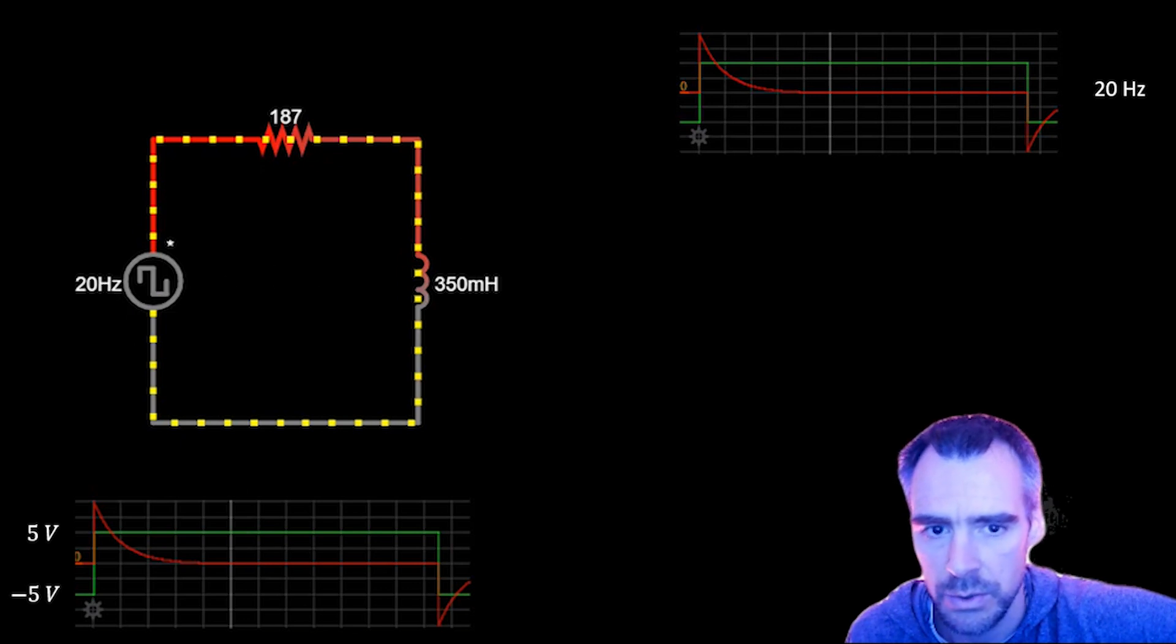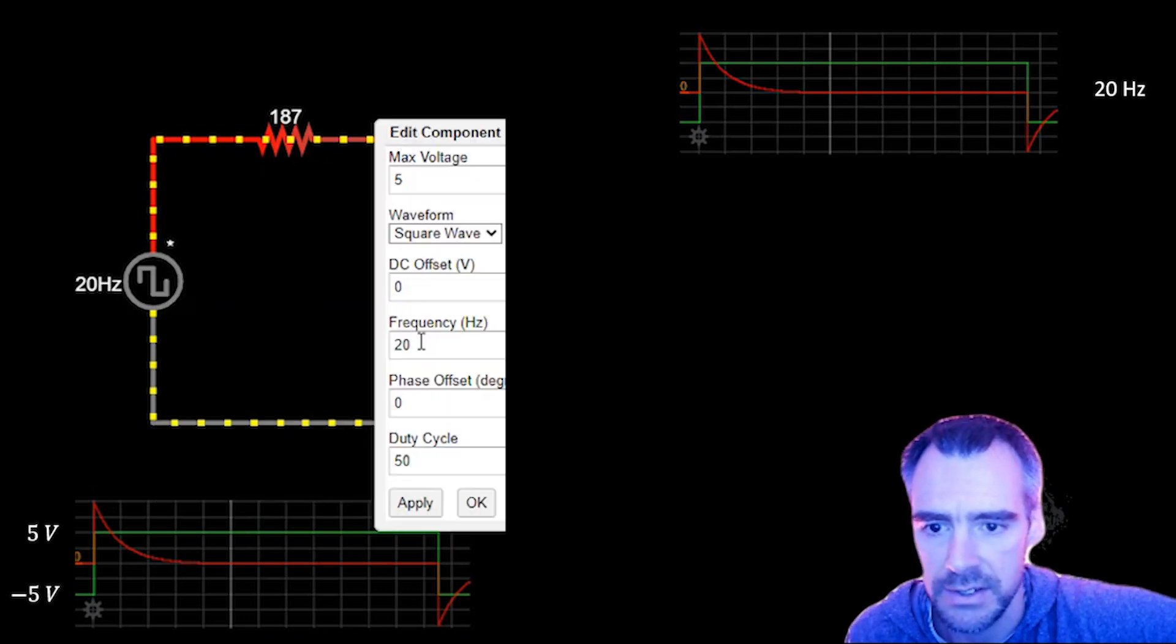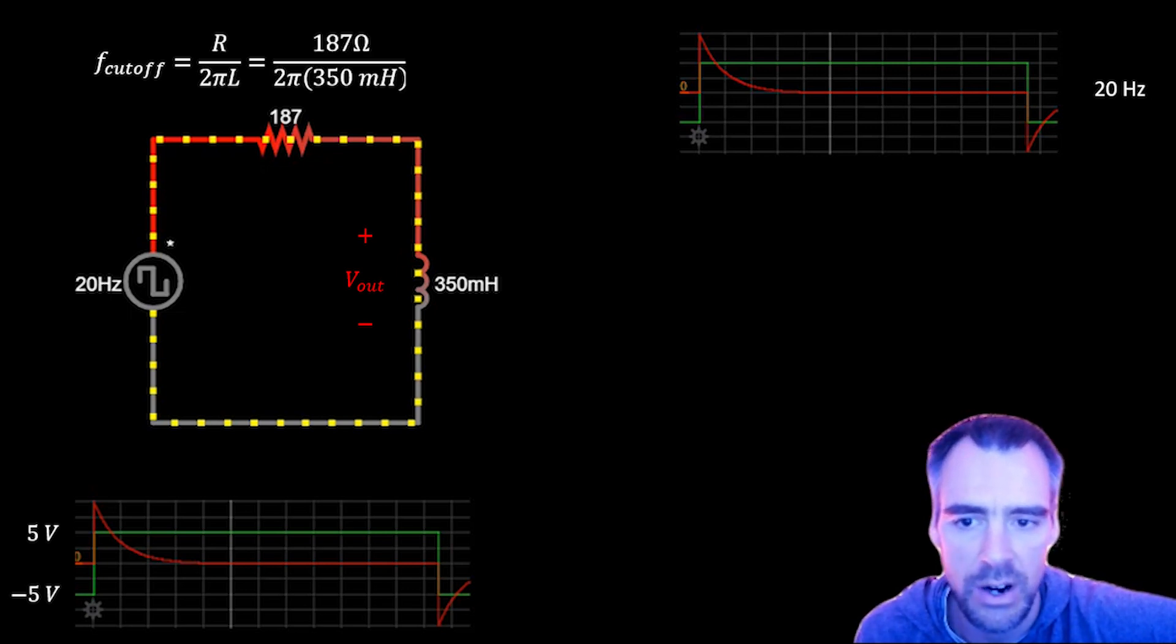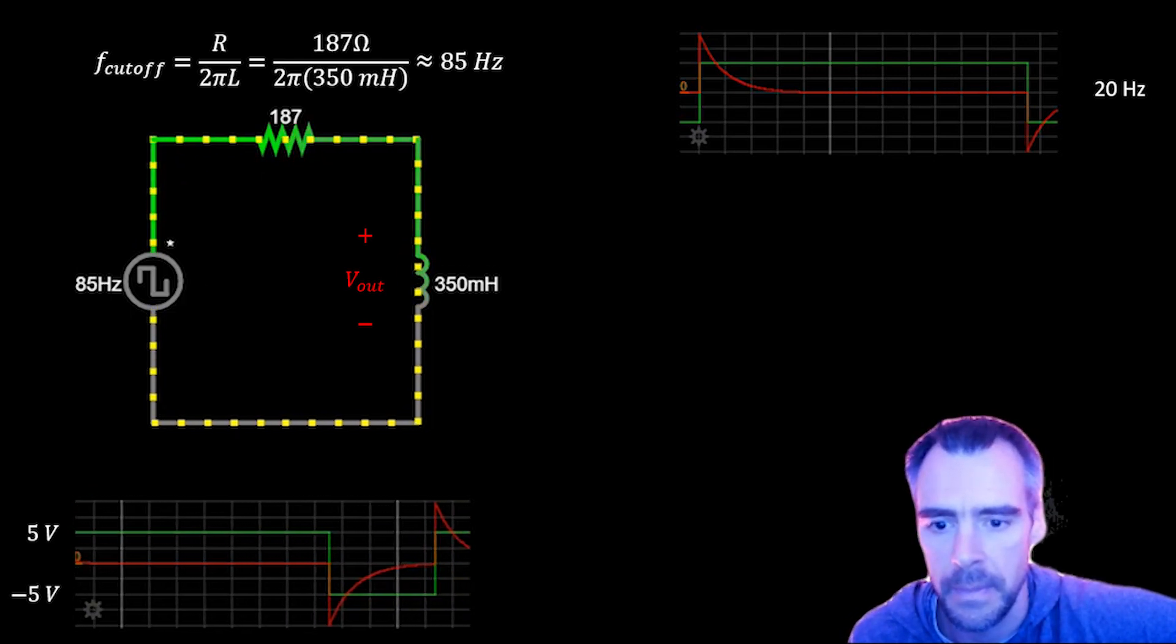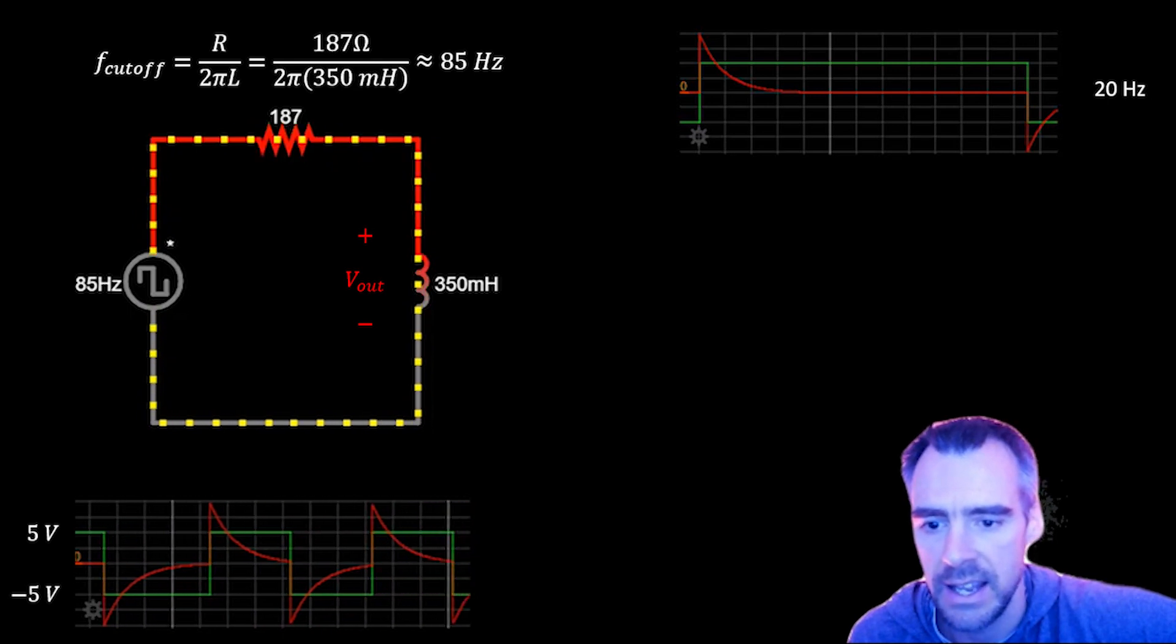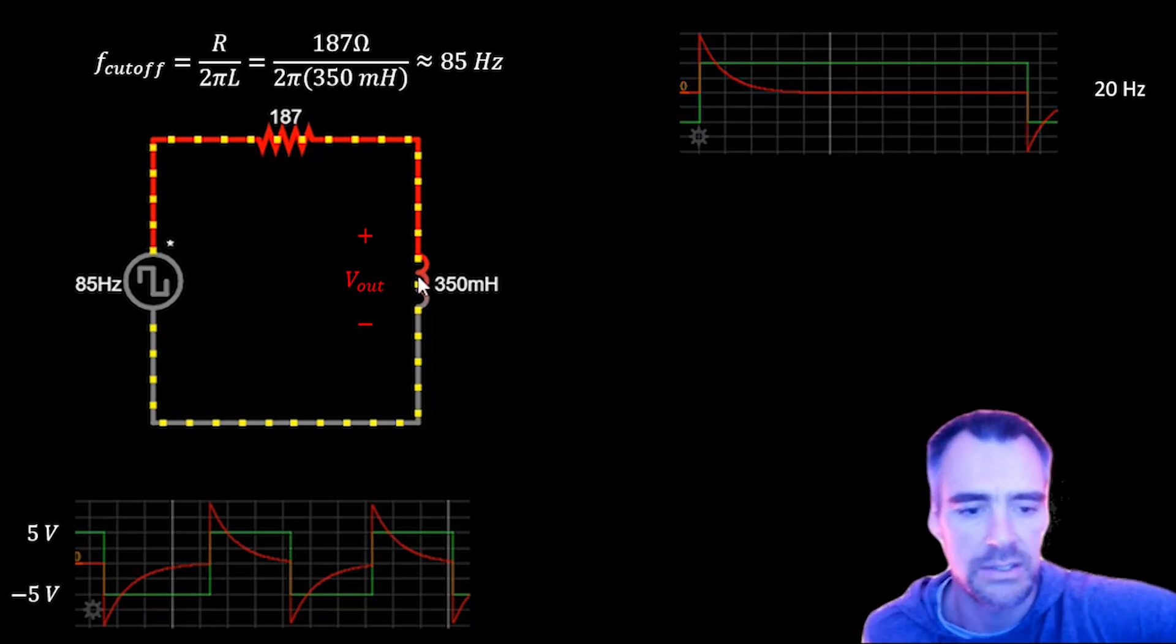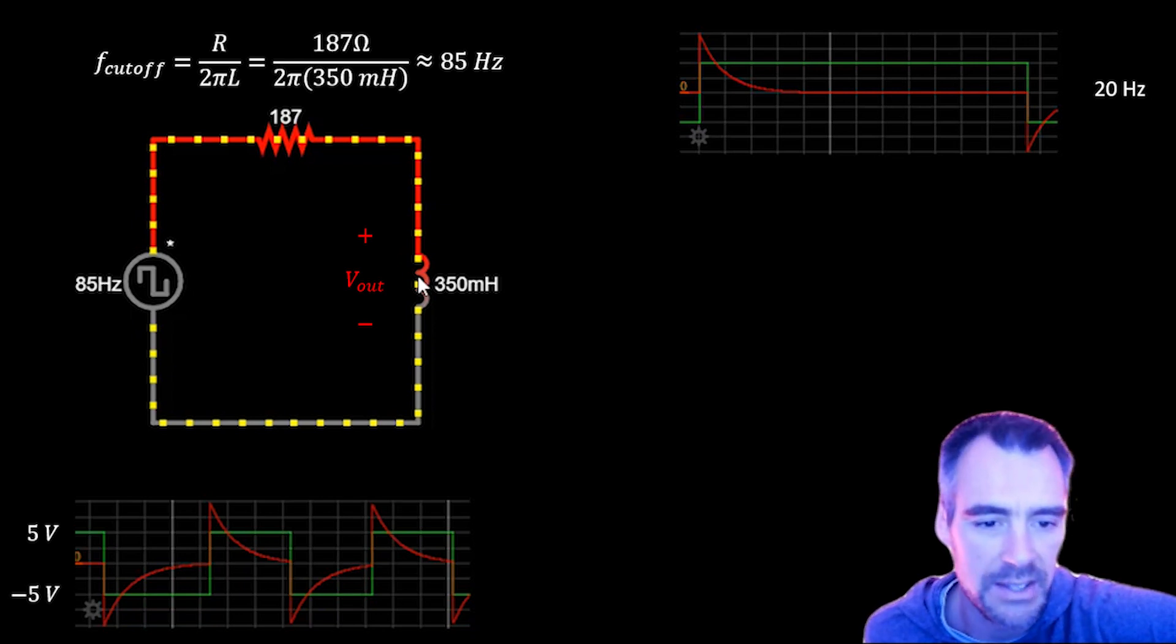Let's move on to 85 hertz instead. 85 hertz is important because that's the cutoff frequency of this, which you can find as R over 2πL. If you plug these numbers in - 187 ohms for R, 350 millihenries for L - you end up with a cutoff frequency around 85 hertz. At the cutoff frequency, the voltage across this inductor is still tending towards zero, but before it really gets too close to zero, it switches again. This isn't really going to pass and it's not really going to reject - it's somewhere in between.